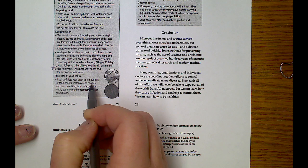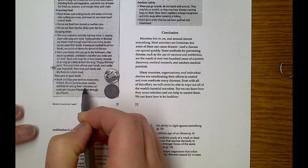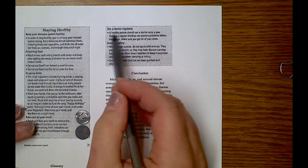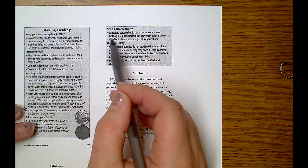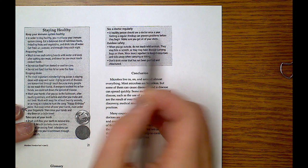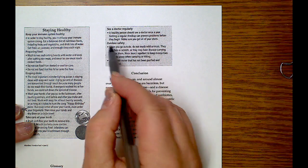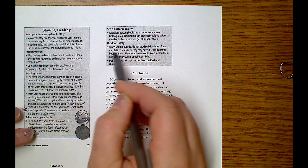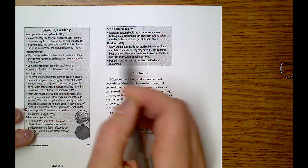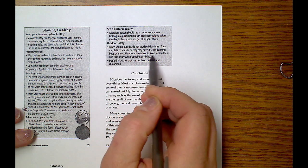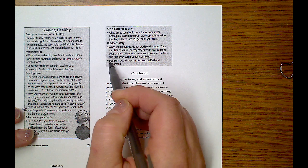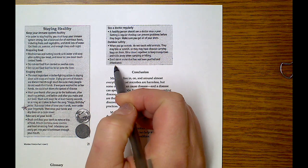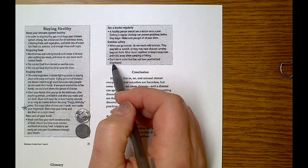Take care of your teeth. Brush and floss your teeth to remove bits of food. Mouth bacteria causes cavities and feeds on rotting food. Infections can easily get into your bloodstream through your mouth. See a doctor regularly. A healthy person should see a doctor once a year. Getting a regular checkup can prevent problems before they begin. Outdoor Safety: when you go outside, do not touch wild animals. They may bite or scratch. They may have disease-carrying bugs on them. Wear insect repellent to keep mosquitoes and ticks away when camping or hiking. Don't drink water that has not been purified and chlorinated.